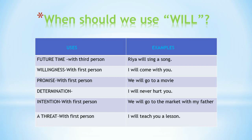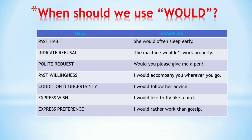Let us learn the modal 'would.' Its uses are: past habit, indicate refusal, polite request, past willingness, condition, uncertainty, express a wish, and express preference. For past habit: 'She would often sleep early.' To indicate refusal: 'The machine wouldn't work properly.'